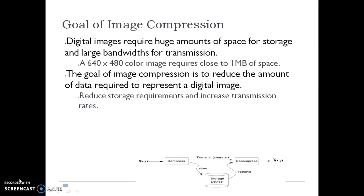Digital images require huge amounts of space for storage and large bandwidth for transmission. A 640 by 480 color image requires approximately 1 megabyte of memory. The goal of image compression is to reduce the amount of data required to represent a digital image, reducing storage requirements and increasing transmission rates.